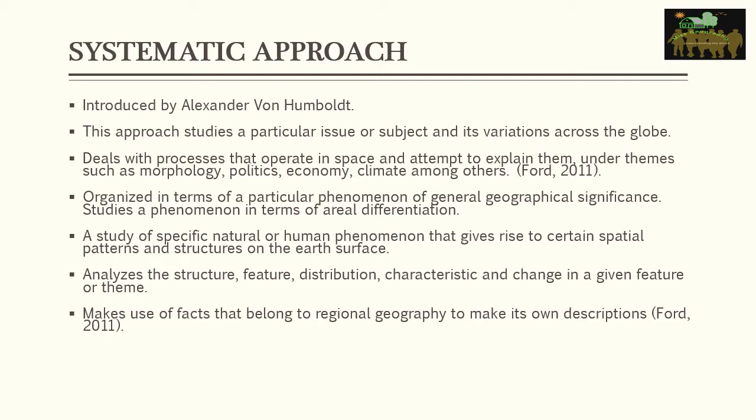It makes use of facts that belong to regional geography to make its own descriptions. In simple terms, the systematic approach is about looking at a particular issue, phenomenon, or event in geography in relation to different places across the globe — it is more like a comparative study. For instance, if you are studying climate, you are studying one issue but looking at it across different spaces or places.